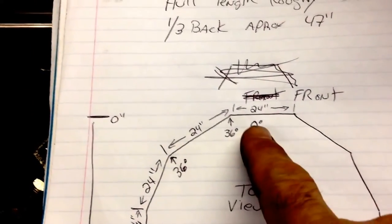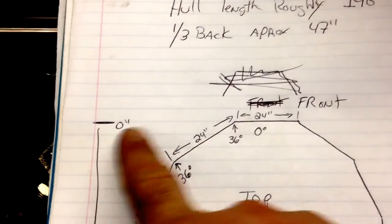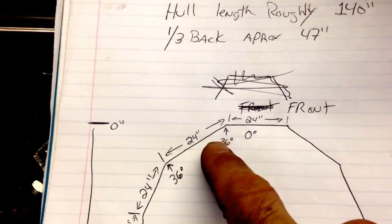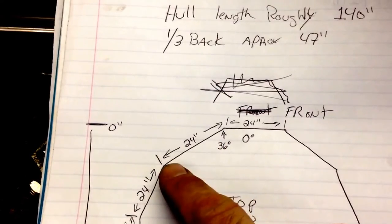The front of the machine here we call that zero inches and zero degrees. The first turn on the hull is 36 degrees, travels 24 inches.